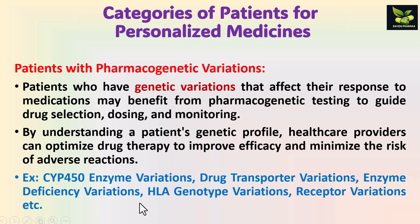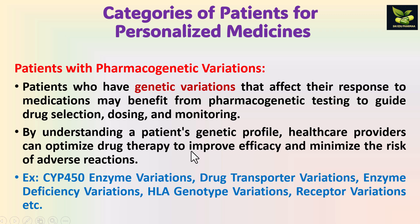The next category is patients with pharmacogenetic variations. These patients have genetic variations, and by pharmacogenetic testing we can identify those variations and accordingly decide drug selection, dosing, and monitoring. The patient's genetic profile is understood, and healthcare providers then provide drug therapy to improve efficacy and minimize the risk of adverse effects.